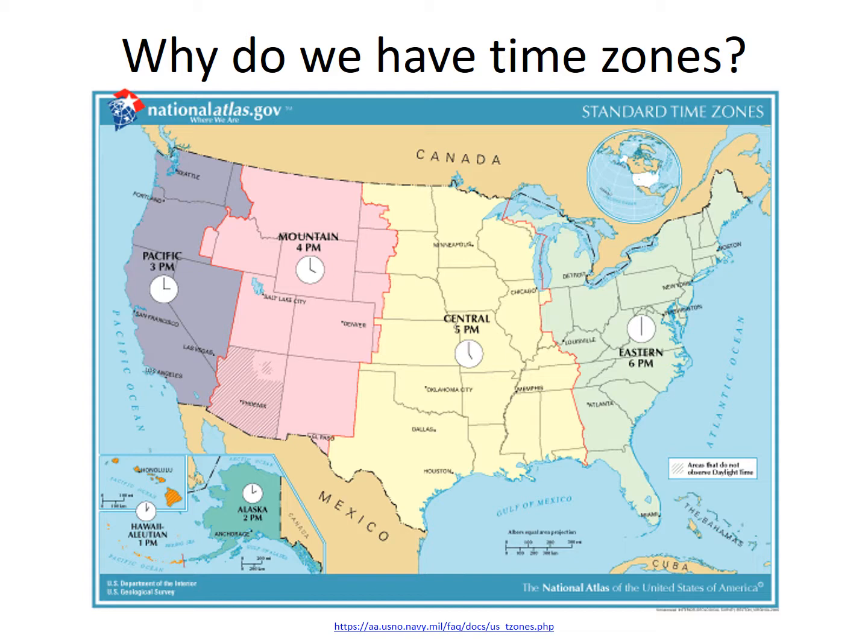Railroad time was first introduced on the Great Western Railway in England in 1840, when a number of different local times were synchronized and a single standard time was applied.